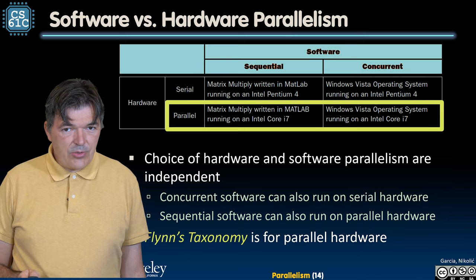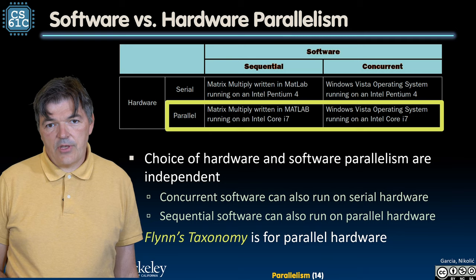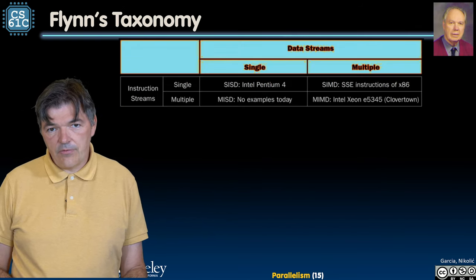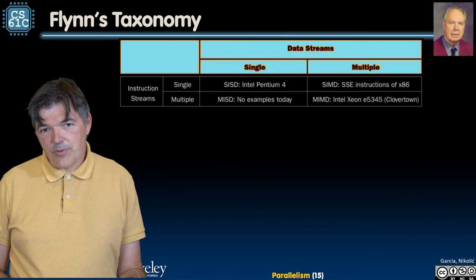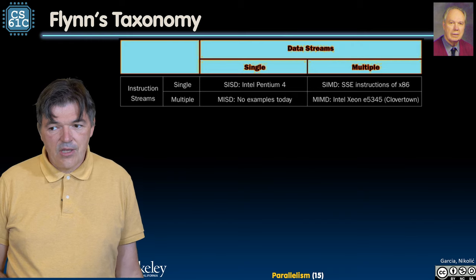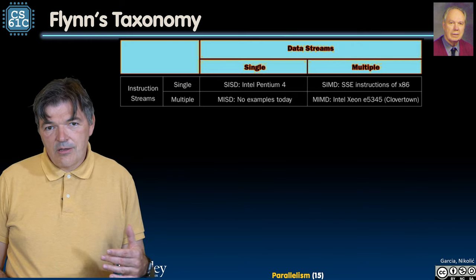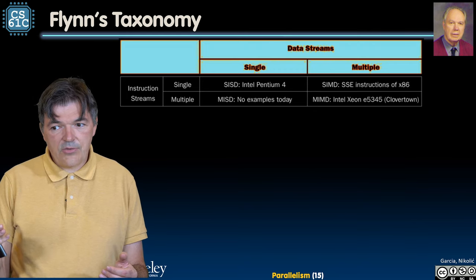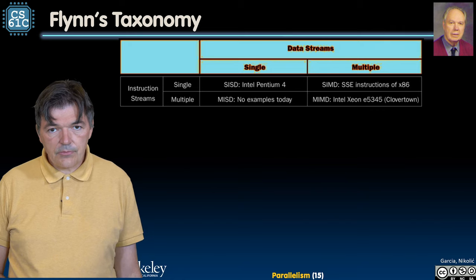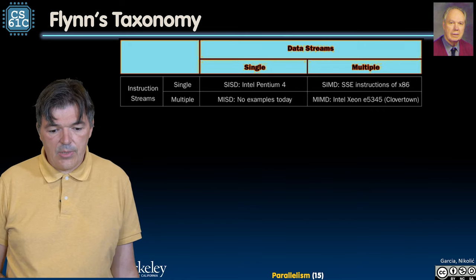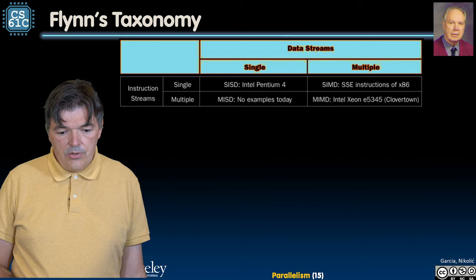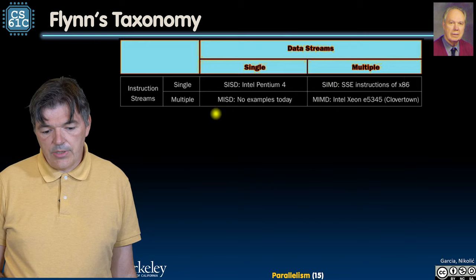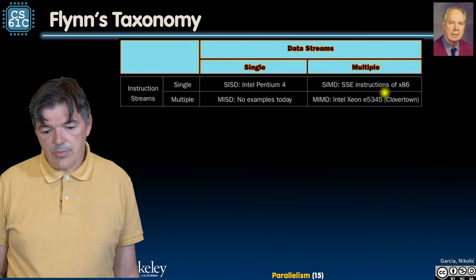Flynn's taxonomy is essentially a classification of parallel hardware. It is named after Professor Michael Flynn, a Professor Emeritus at Stanford University. He classified different types of parallelism between parallelism in data streams and instruction streams. There are four entries in this table: Single Instruction Single Data (SISD), Single Instruction Multiple Data (SIMD), Multiple Instructions Single Data (MISD), and Multiple Instructions Multiple Data (MIMD).